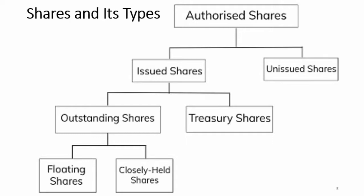First of all, we have authorized shares. From authorized shares, we have issued shares and unissued shares. Issued shares can be further categorized into outstanding shares and treasury shares. And then outstanding shares are further divided into floating shares and closely held shares. We will study all these categorizations or classification types of shares one by one.